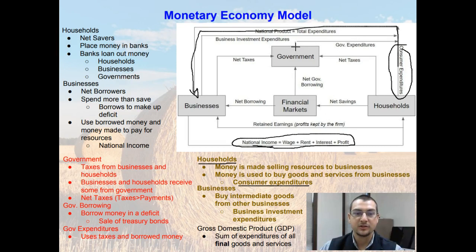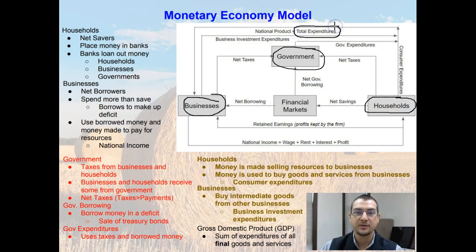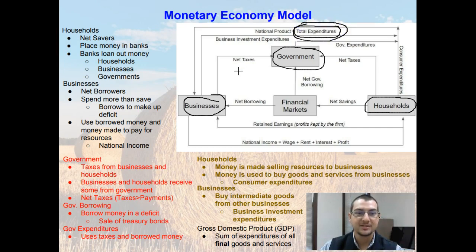The government is also buying goods from businesses. So businesses are providing goods to the government, to households, and to other businesses. All the money flowing out — as consumer expenditures, as government expenditures — the total expenditures is known as the national product. In the last video we talked about the national product being the sum of all consumer expenditures, but in reality it's the sum of all total expenditures. Now with this expanded model, we can see that business investment expenditures, government expenditures, and consumer expenditures all go into the national product.